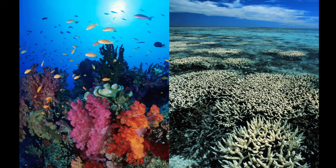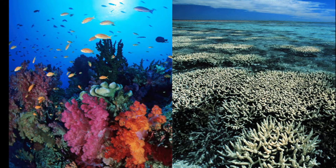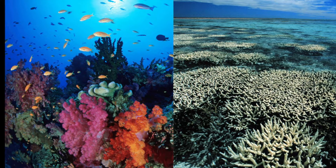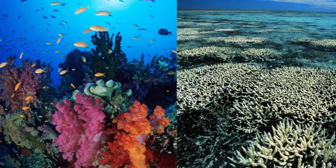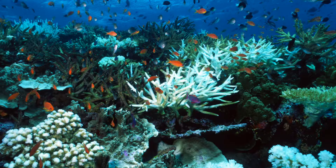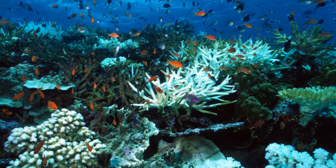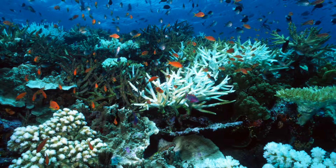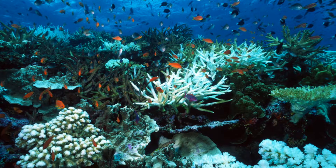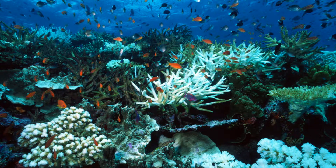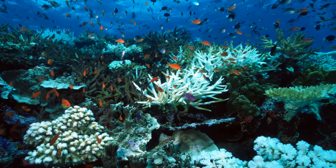Coral bleaching occurs when ocean temperatures rise too high. This causes the coral to spit out the plankton they have stored in them. Scientists still do not know why they do this, but they do know that the coral usually dies a couple of weeks after spitting out the plankton. The plankton are what give the corals their bright colors, and without plankton the coral turns white, which is why they call it coral bleaching.